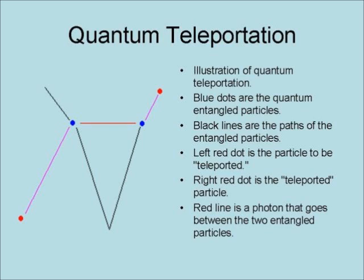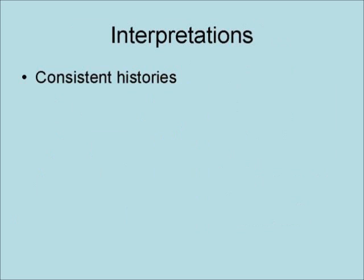There are several different interpretations of quantum mechanics. One is called consistent histories. In this view, quantum mechanics simply predicts the probabilities of various alternative histories.